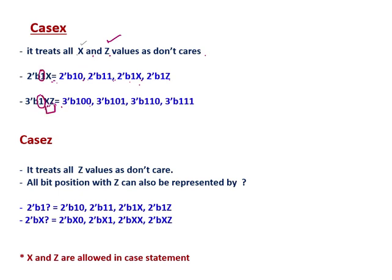So what is changing is the xz part: 00, 01, 10, 11. This can also be written as 3b1xz, where the first bit 1 is fixed and the xz bits are the don't care positions.